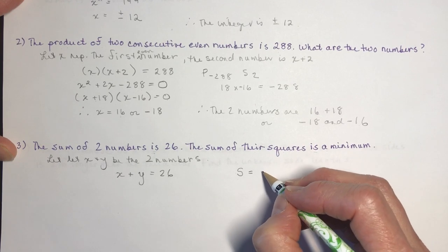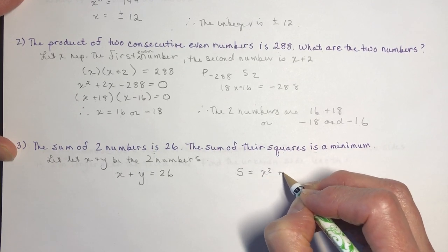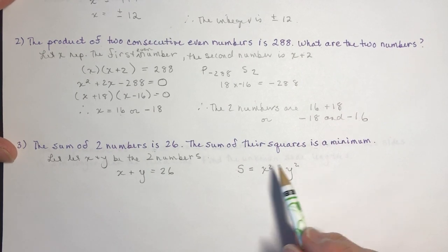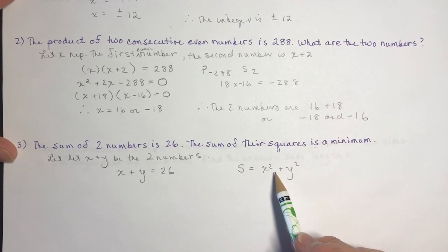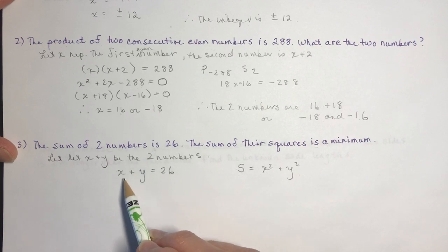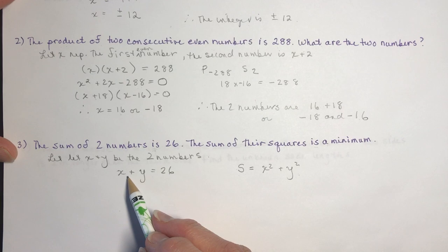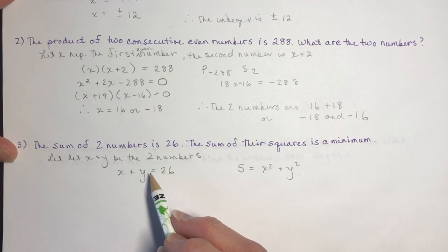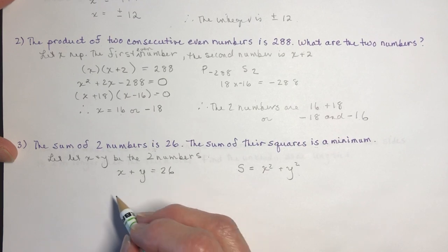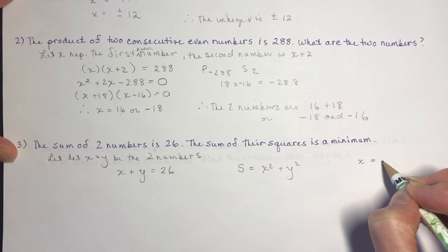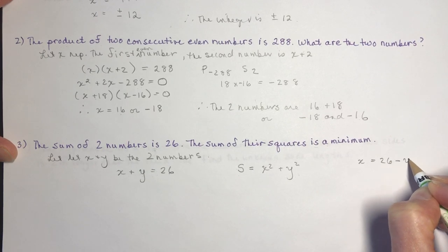Their squares means x squared plus y squared. We've got two different variables, so just like a perimeter-and-area question, we write one in terms of the other. From x plus y equals 26, we get x equals 26 minus y.